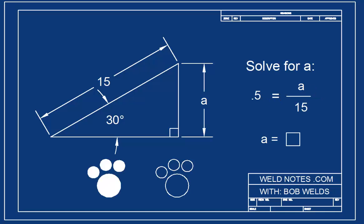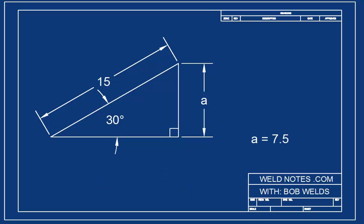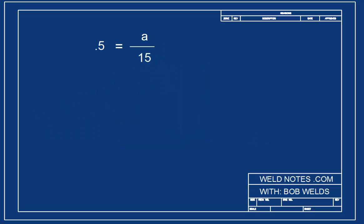A is equal to 7.5. If you were able to solve it by looking at it, let me encourage you to go through the algebra steps to get good at them. Here, we'll multiply both sides by 15 to get rid of that fraction. Then we see that 15 times .5 is equal to 7.5, and that's our answer.